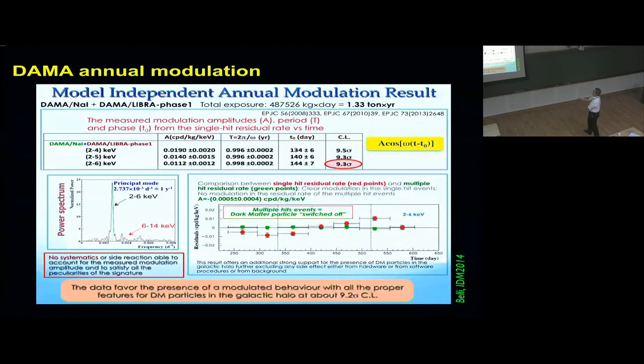These are the slides directly from Pierluigi Belli of DAMA, and I use them because it shows what they actually do. We need to focus on this graph on the bottom right. This is a periodogram. We take the time axis and fold it back every year so that each month occurs at the same position on the graph and then put the counts. In green are the control counts, multiple hit events that are certainly not due to dark matter. They don't show any pattern. In red are the single hit events which may be due to dark matter, and they show this modulation.